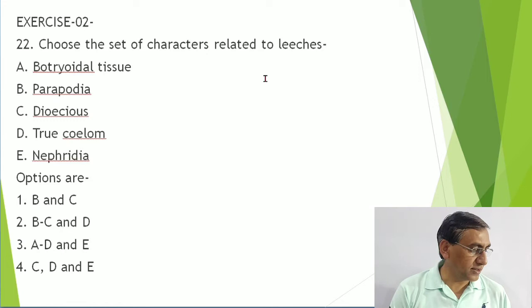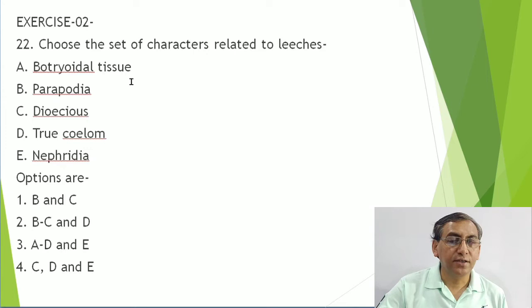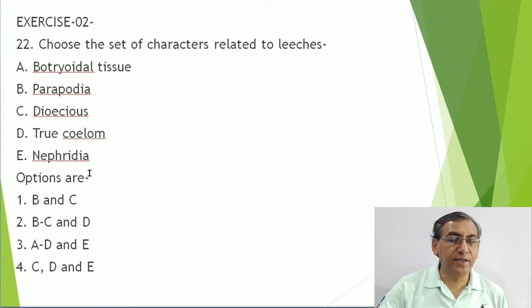Characters related to leech: leech is an annelid. It has botryoidal tissue - correct - so option A is correct. Parapodia are absent in leech. Leech is monoecious. The coelom is present, and nephridia are present.